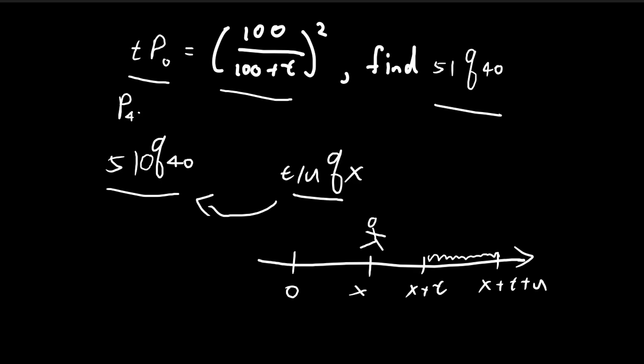For example, if I write p40 this is actually equal to 1p40. But if it's just 1, we use a shorthand and don't write anything. So in this case, 5 straight line q40 actually has a 1 hidden over here.